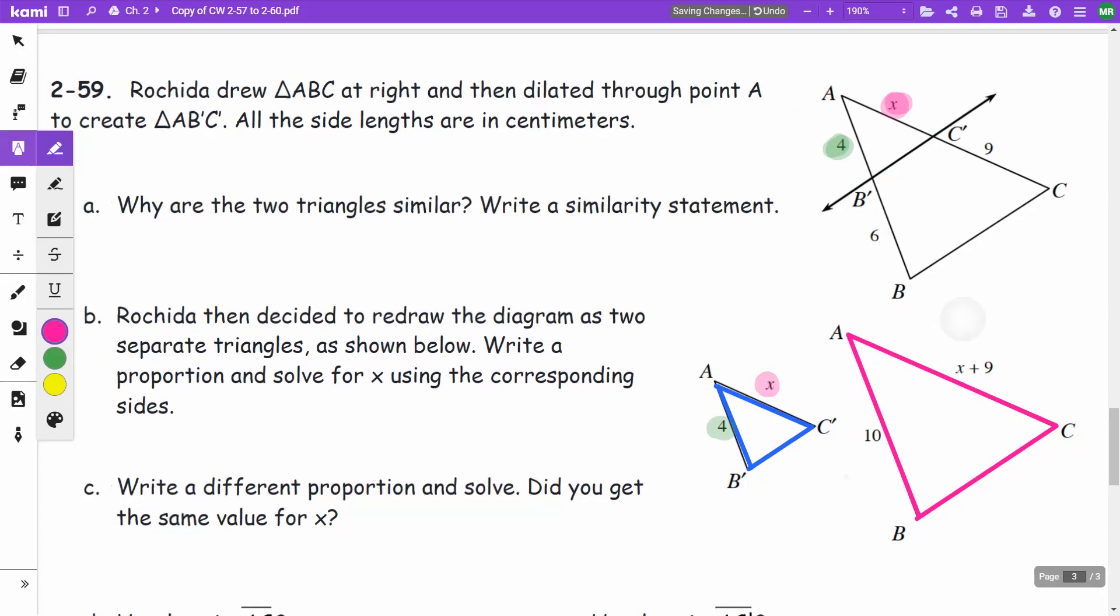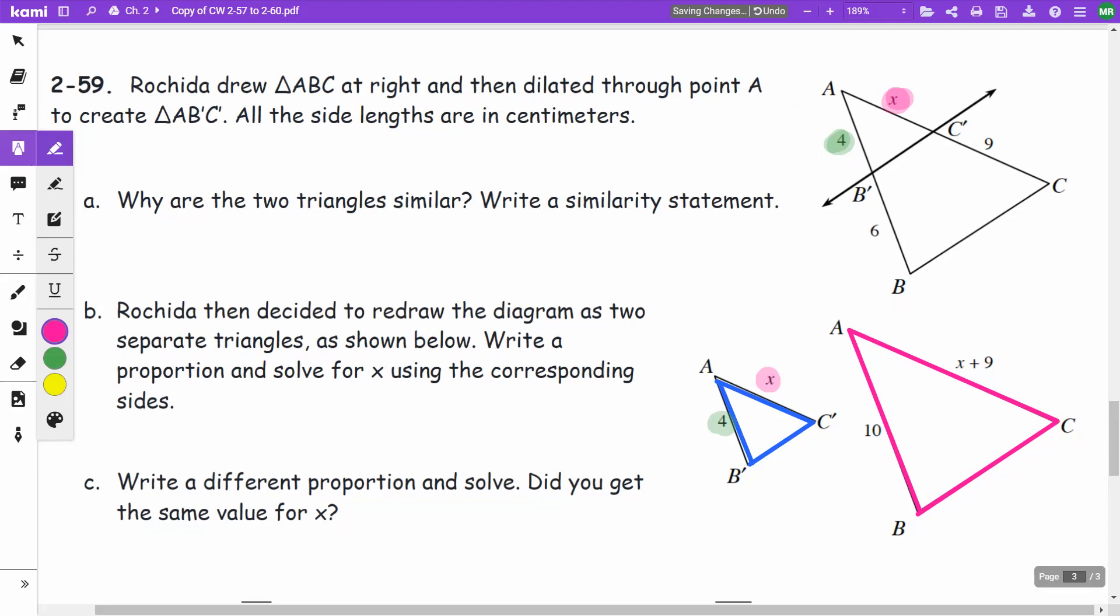When I'm setting up these proportions, and if I think of these as two separate triangles, the X is going to correspond with the X plus 9. The 4 is going to correspond with the 10.